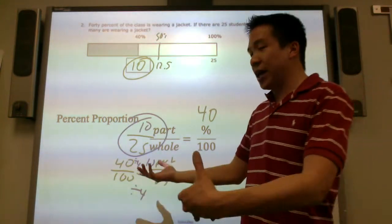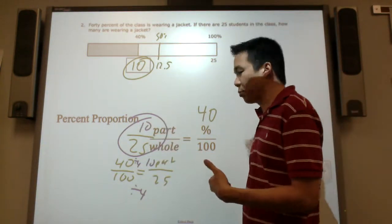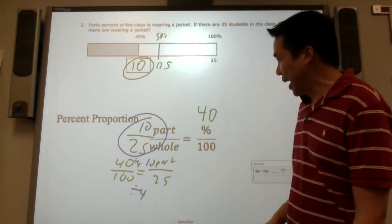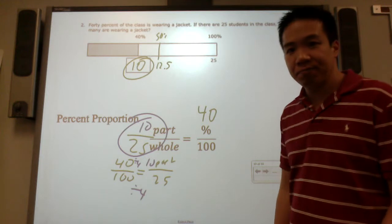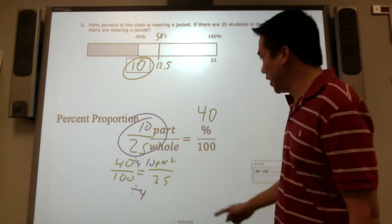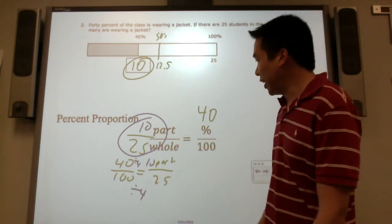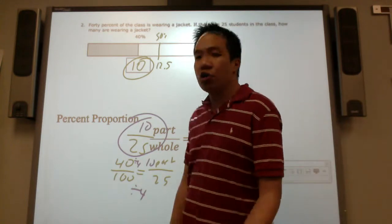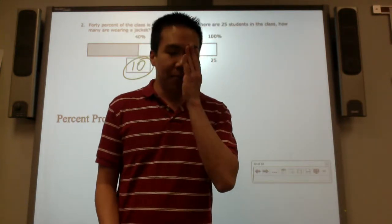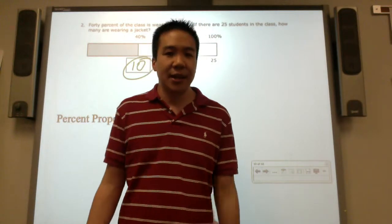What do we practice today? We practice more with the percent proportion. Part over whole equals percent over 100. If they give you the part and the whole, you can find a percent by building up or breaking down. If they give you the part and the percent, you can find a whole. Or, they give you the percent and the whole, you can find a part. We are going to be practicing this through more activities throughout the classes. This is the percent proportion.